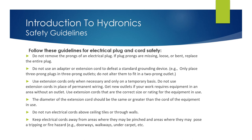Introduction to Hydronics Safety Guidelines: Follow these guidelines for electrical plug and cord safety. Do not remove the prongs of an electrical plug. If the plug prongs are missing, loose, or bent, replace the entire plug. There are three prongs on a plug and they all have a job to do: one is for the power source, one is for the neutral, and one is for the ground. Do not use an adapter or extension cord to defeat a standard grounded device.